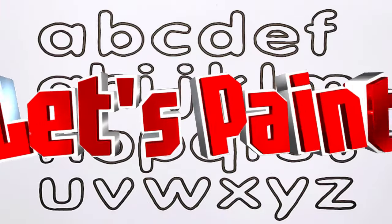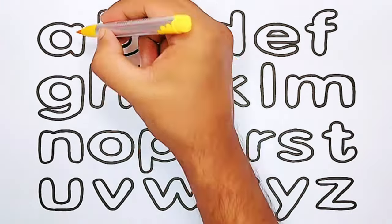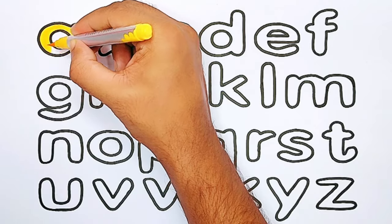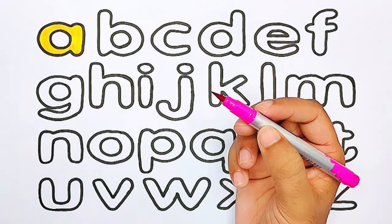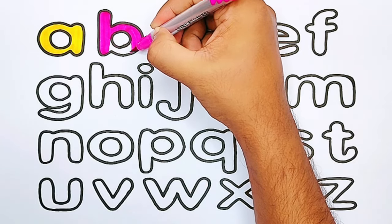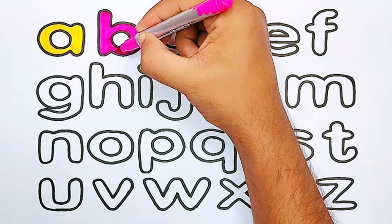Let's paint. Yellow color. A, A for apple, A for apple. Pink color. B, B for ball. B for ball.